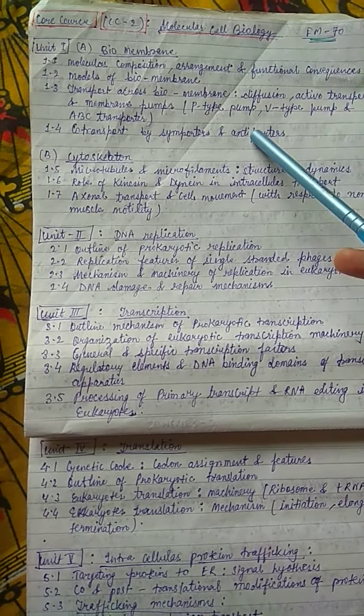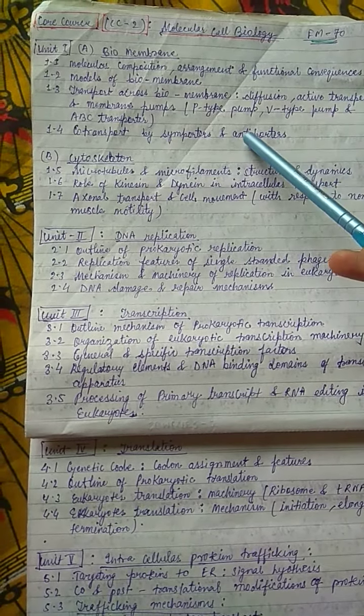Unit 1 is Biomembrane. In this biomembrane topic there are generally four points: molecular composition, arrangement and functional consequences, models of biomembrane, transport across membrane including diffusion, active transport, and membrane pumps — that is P-type pump, V-type pump, and ABC transporter.